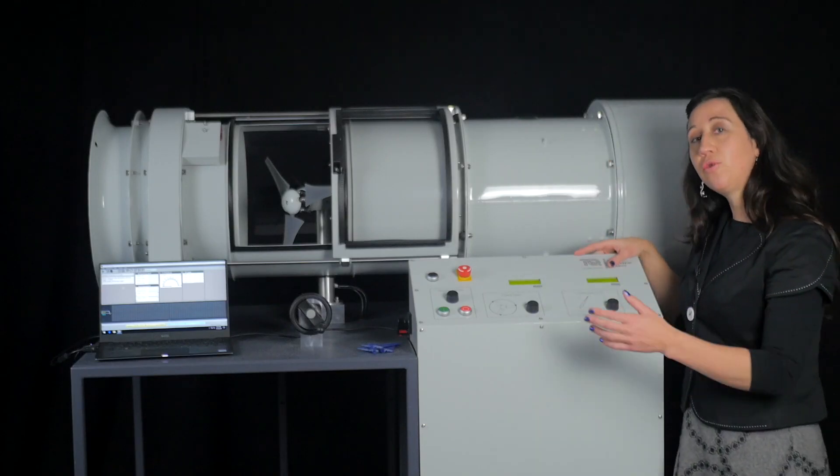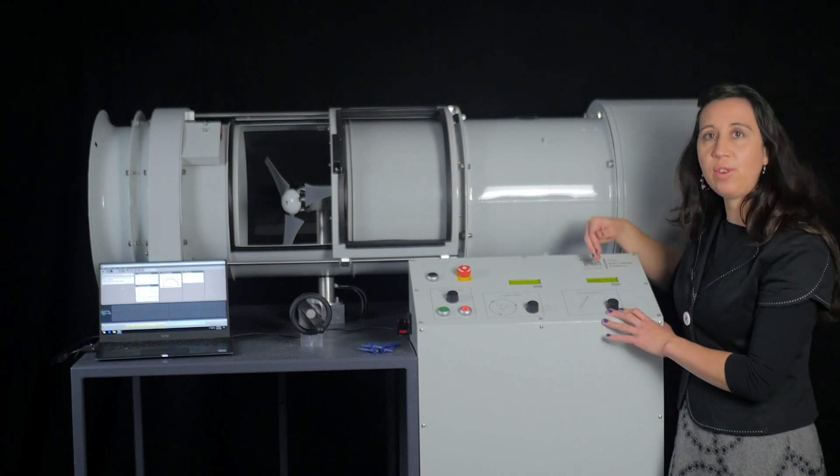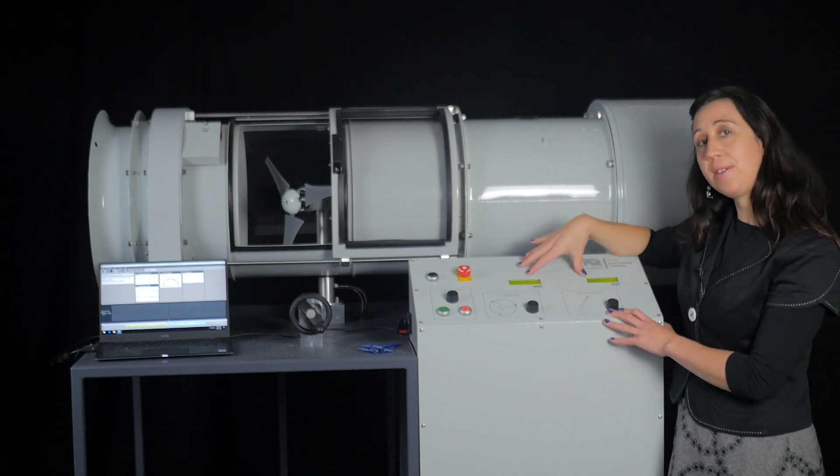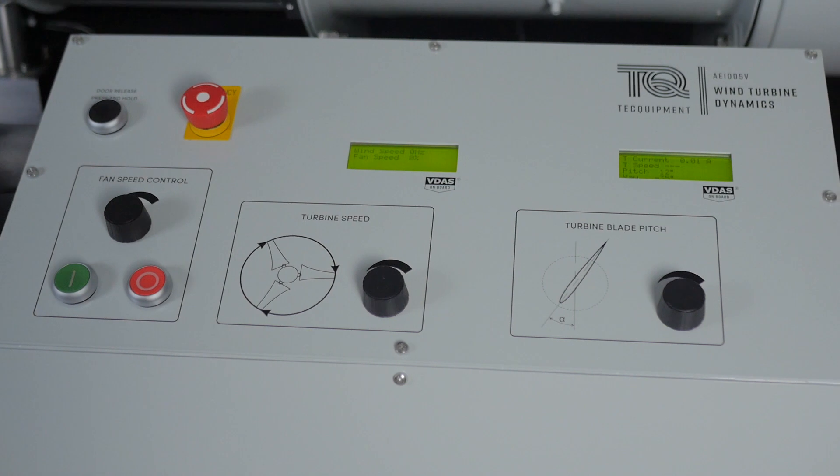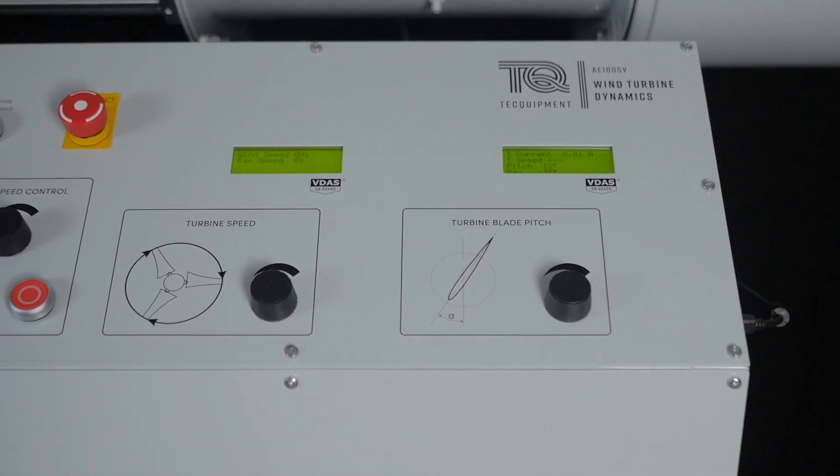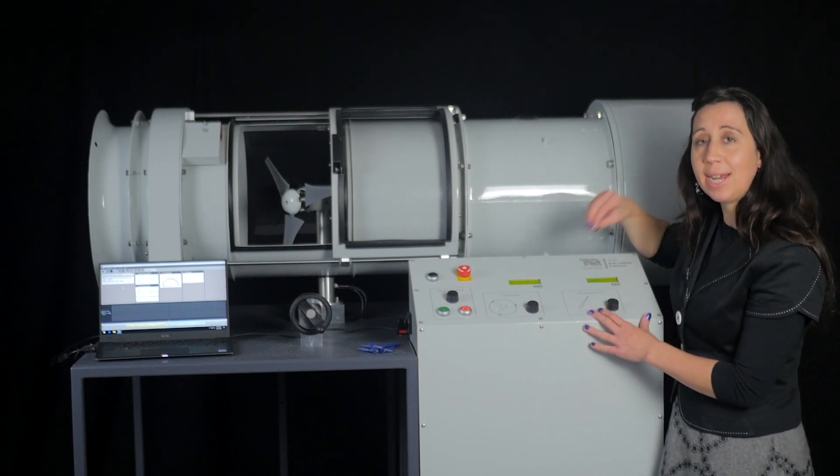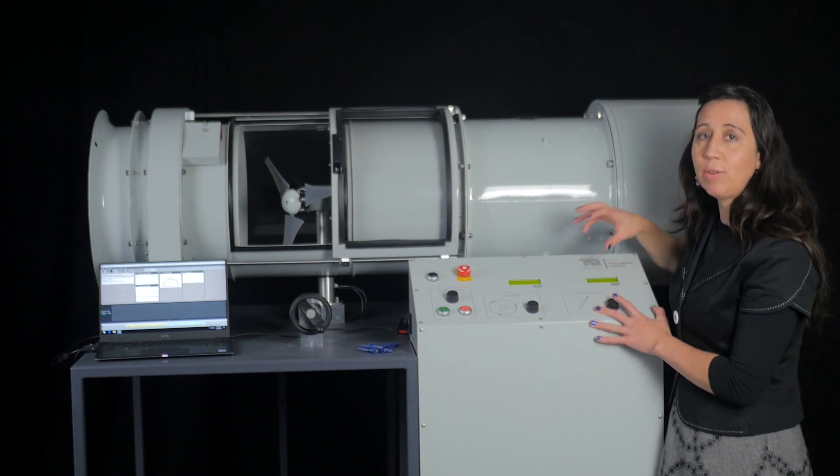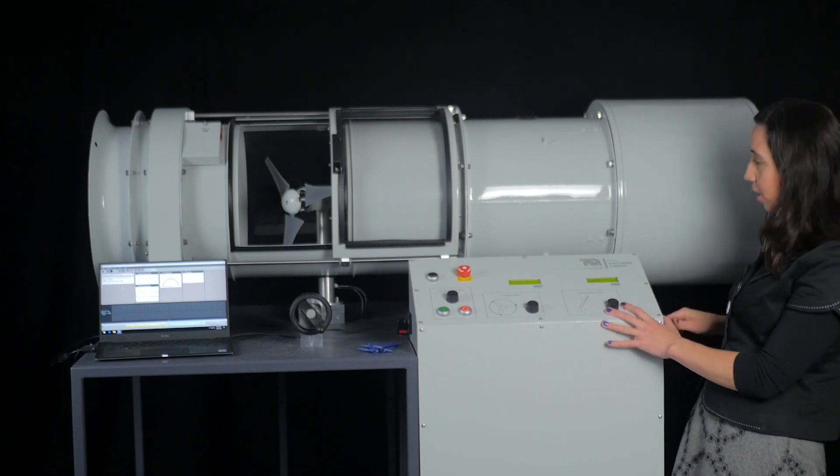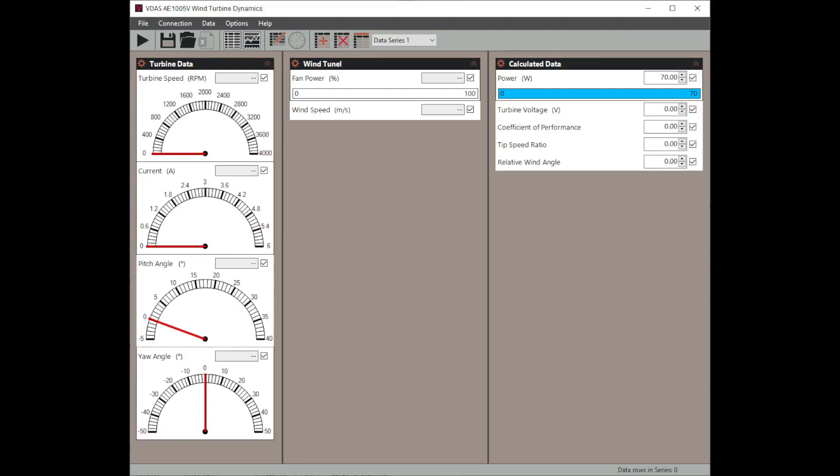Focusing now on the control panel which features two screens. This allows you to operate the experiment as a standalone apparatus so a PC is not required. However, for easy data acquisition, VDAS is on board and has been built in. This can be connected to a computer via a USB cable on the side. We'll come on to talk about the integrated VDAS, i.e. VDAS on board, shortly.